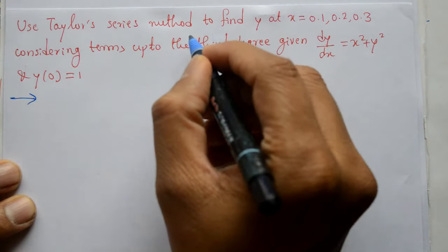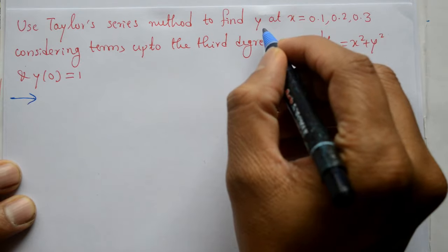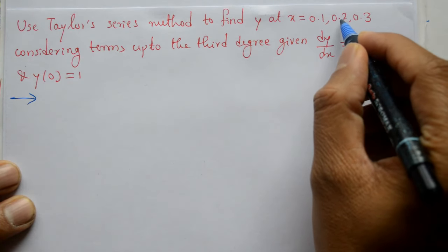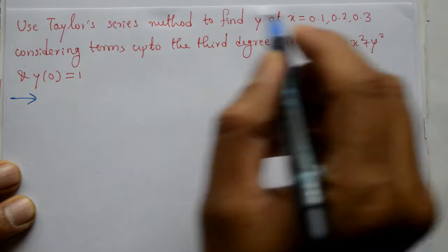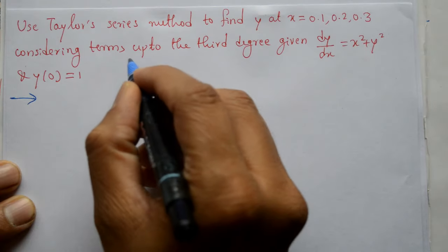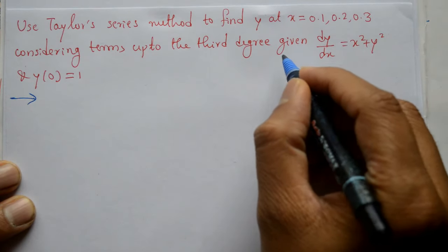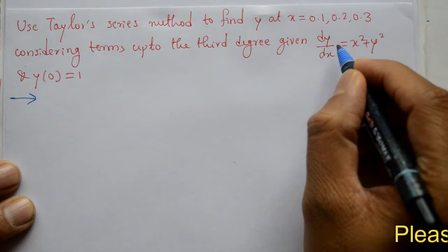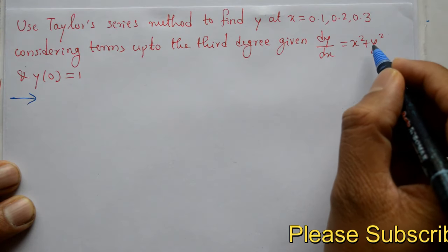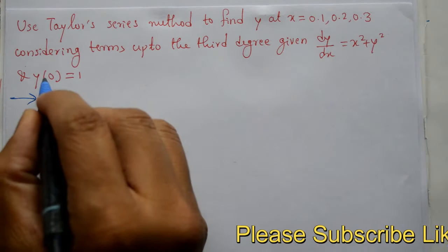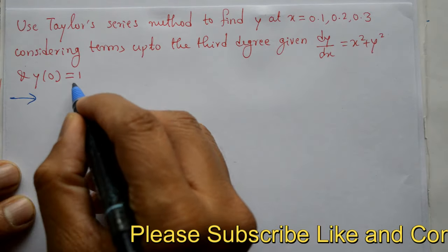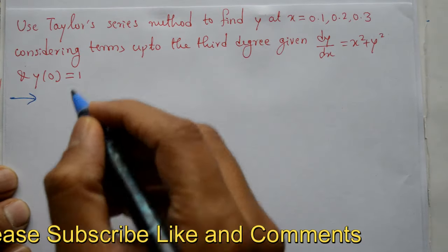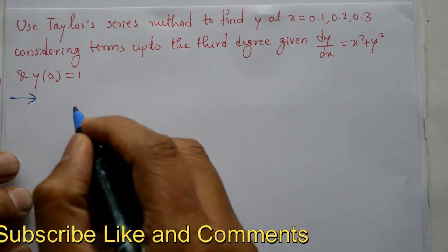Use Taylor series method to find y at x = 0.1, 0.2, and 0.3, considering terms up to the third degree. Given function dy/dx is equal to x square plus y square, and initial condition y(0) is equal to 1.